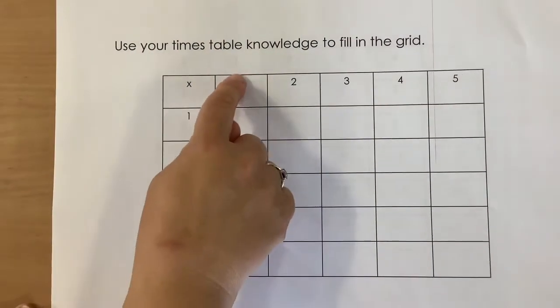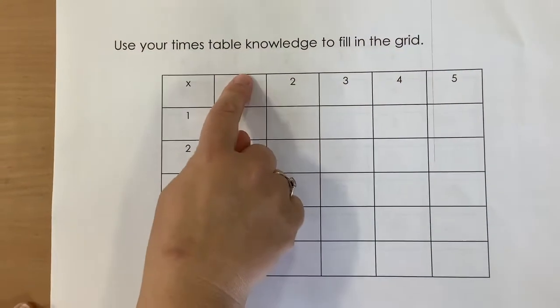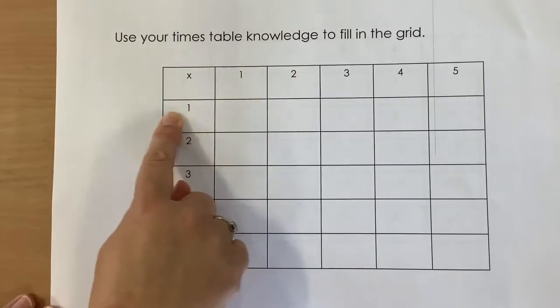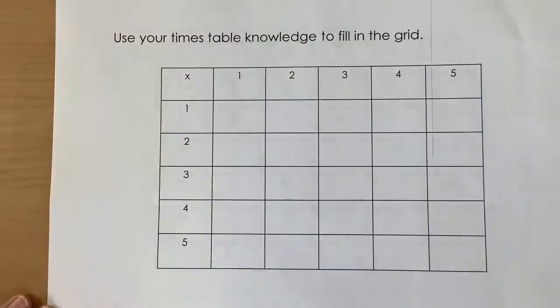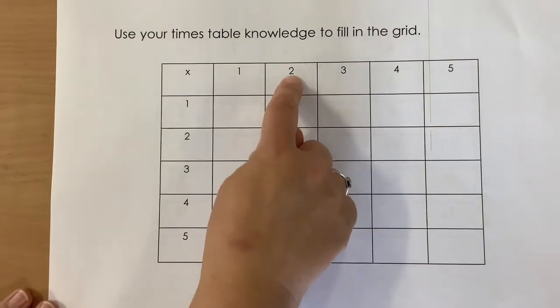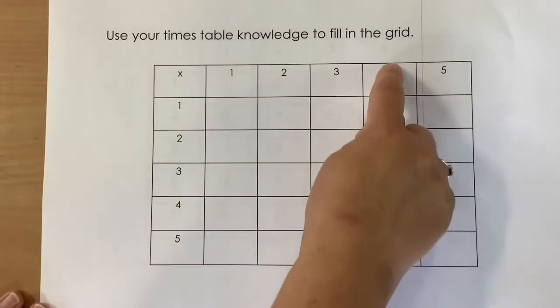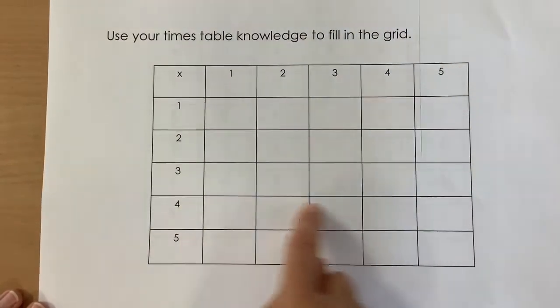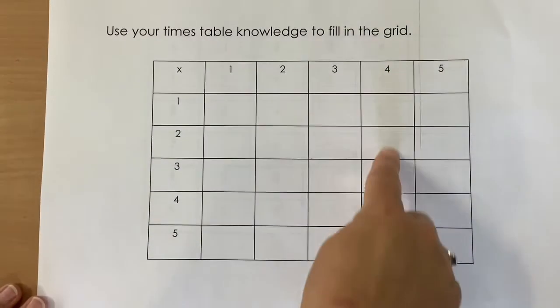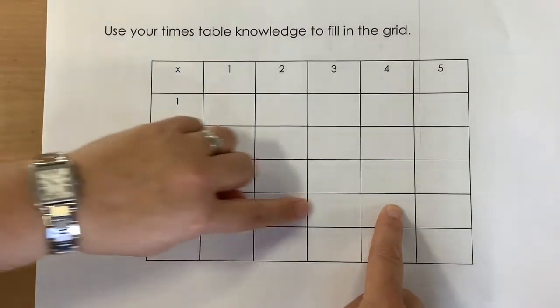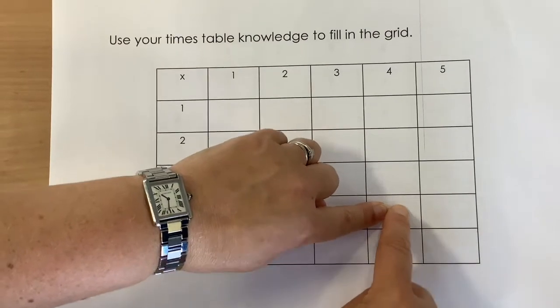And the way that you do that is you look along this column here. So the 1 times 1, in this box you'll write the answer to that. 2 times 1 will go in this box. If I was going to do 4 times 4, I'd go to the 4 here along from the 4 here and the answer would be 16 in here.